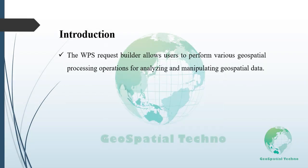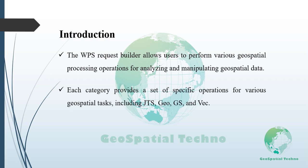In GeoServer, the WPS Request Builder enables users to perform various geospatial processing operations with different functionality to analyze and manipulate geospatial data. Each category provides a set of specific operations tailored to a range of geospatial tasks. Some categories available in the WPS Request Builder are JTS, GEO, GS, and WIC.